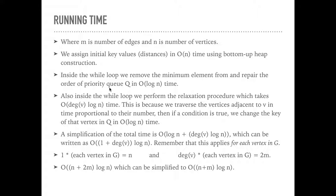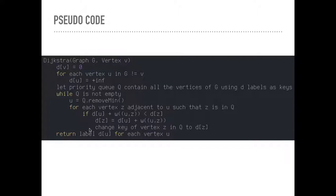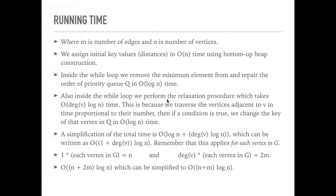Inside the while loop, we've removed the minimum element from and repair the order of priority queue in O(log n) time. So that's this line here, u equals q dot remove min. Since it's a priority queue, when we remove the minimum element, it's going to be at the root of the heap. And so we're going to have to use this, I think they call it bubbling up, to sort of fill that in and reorder. That's going to take log n time just to remove min.